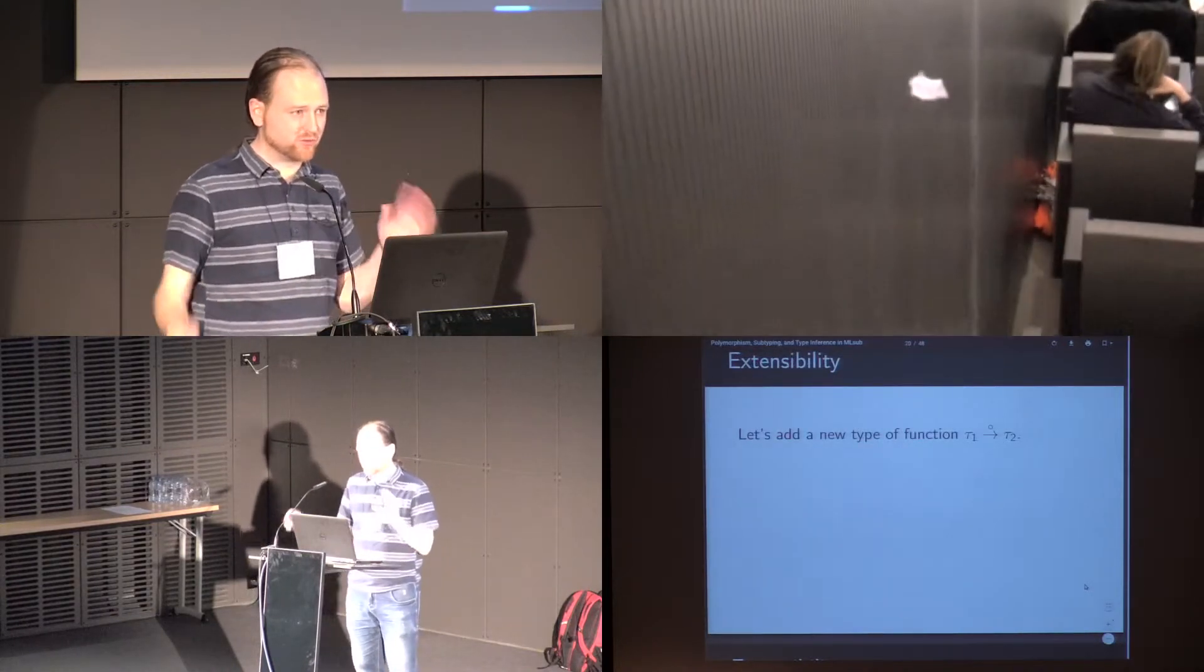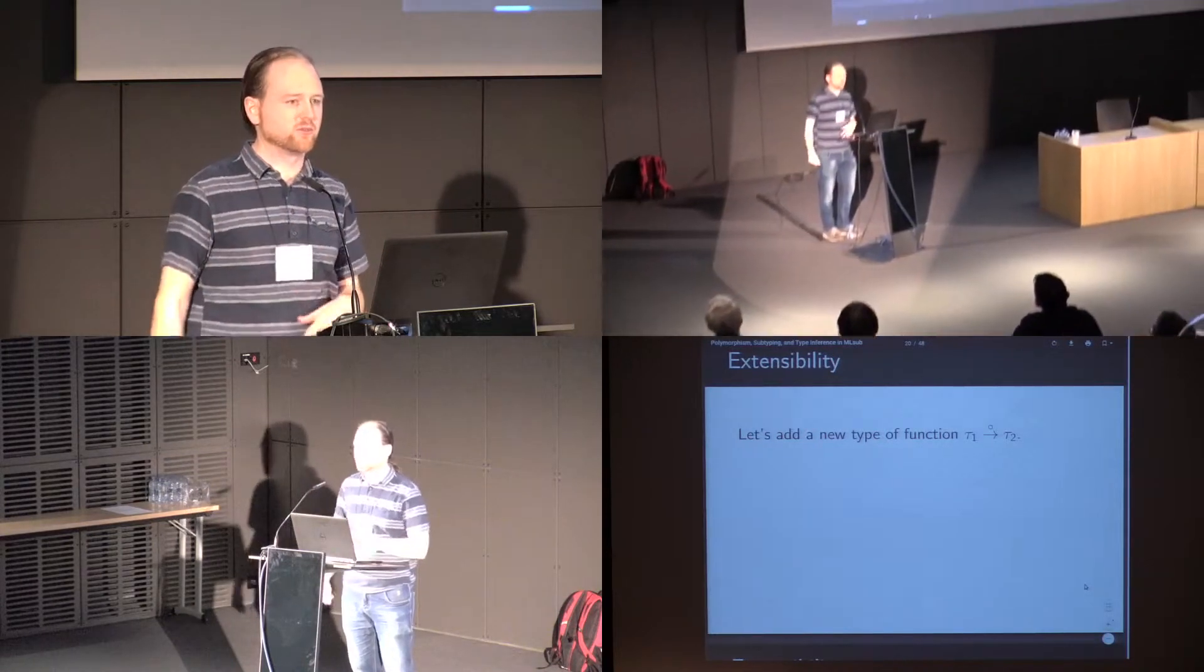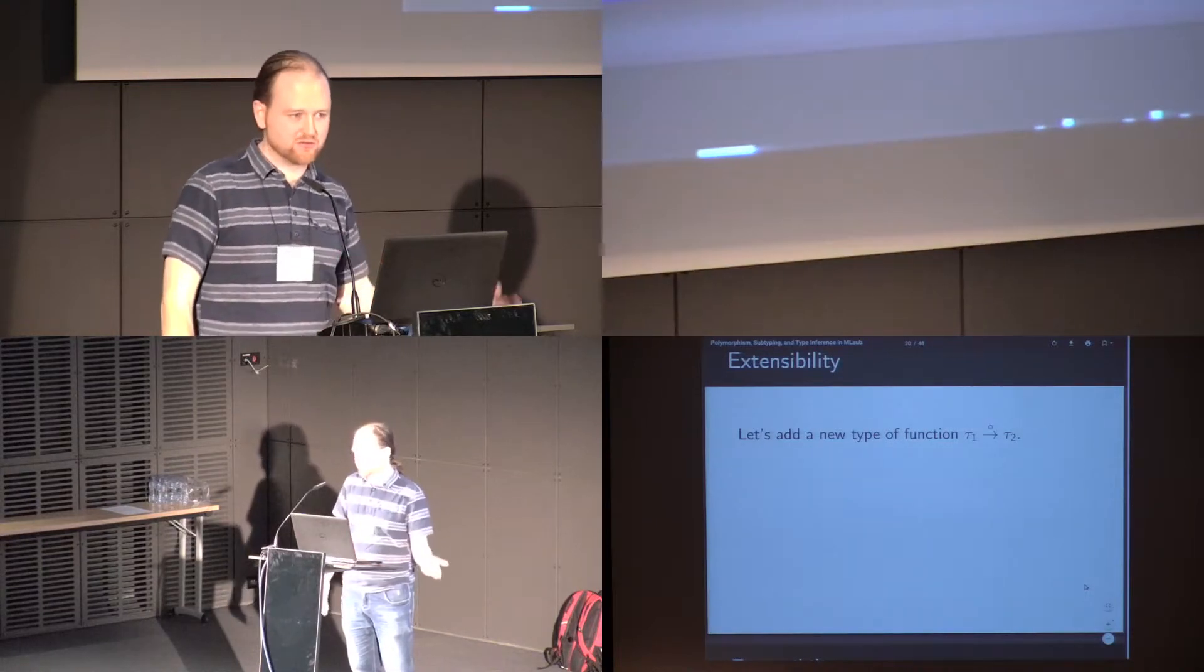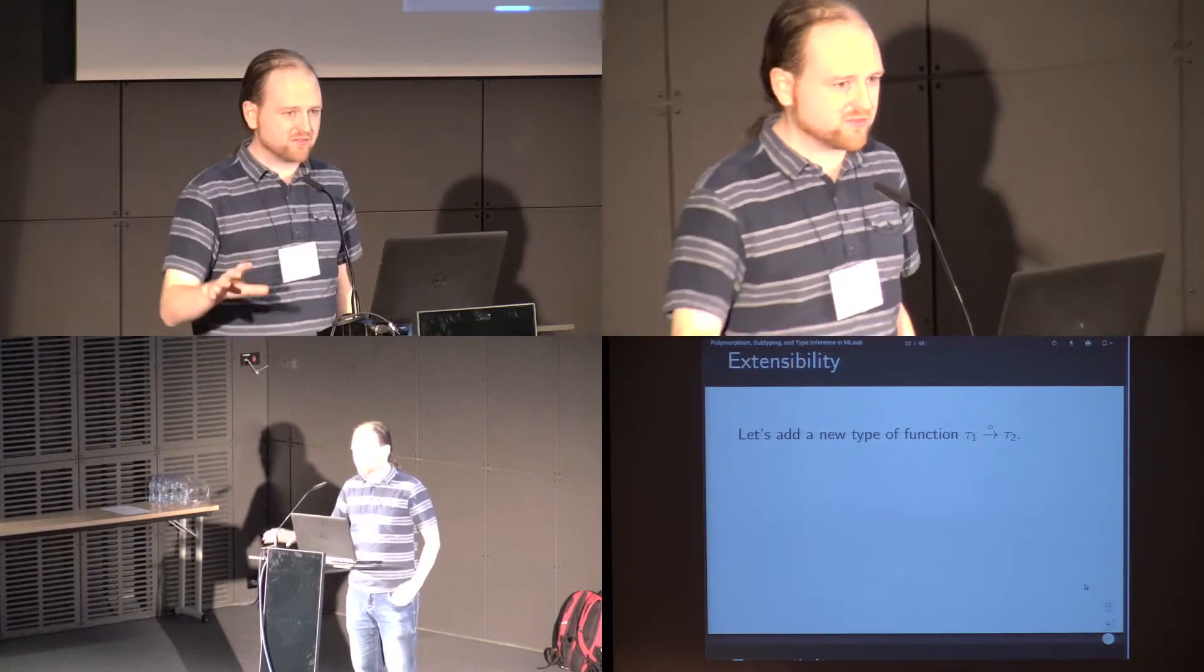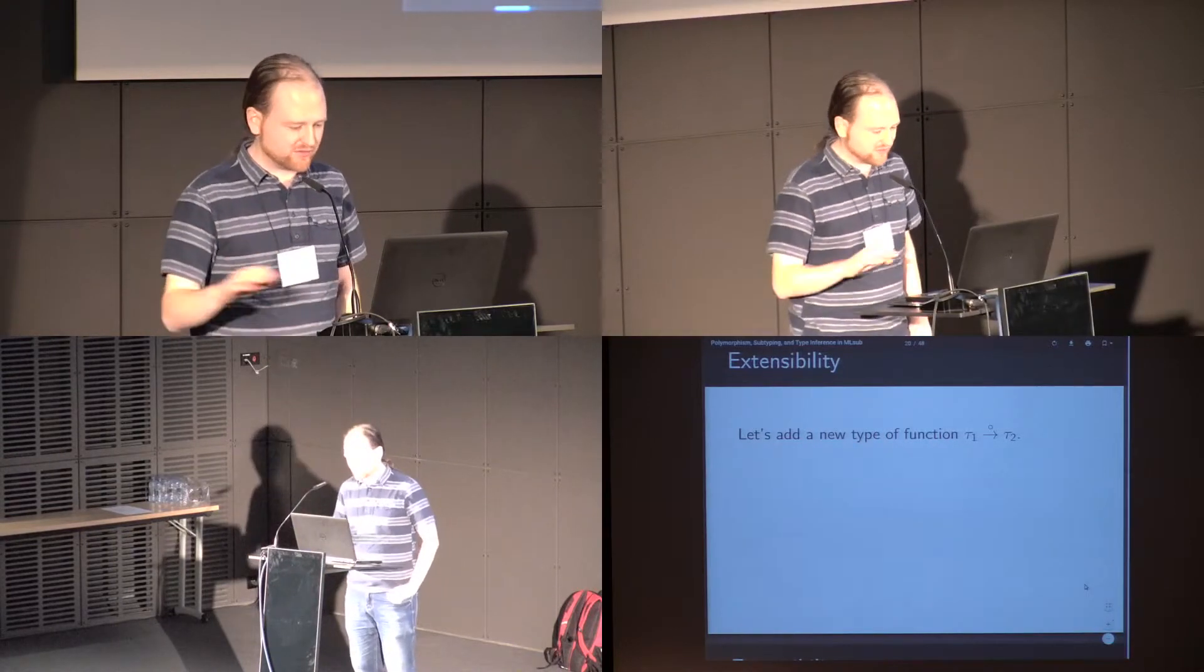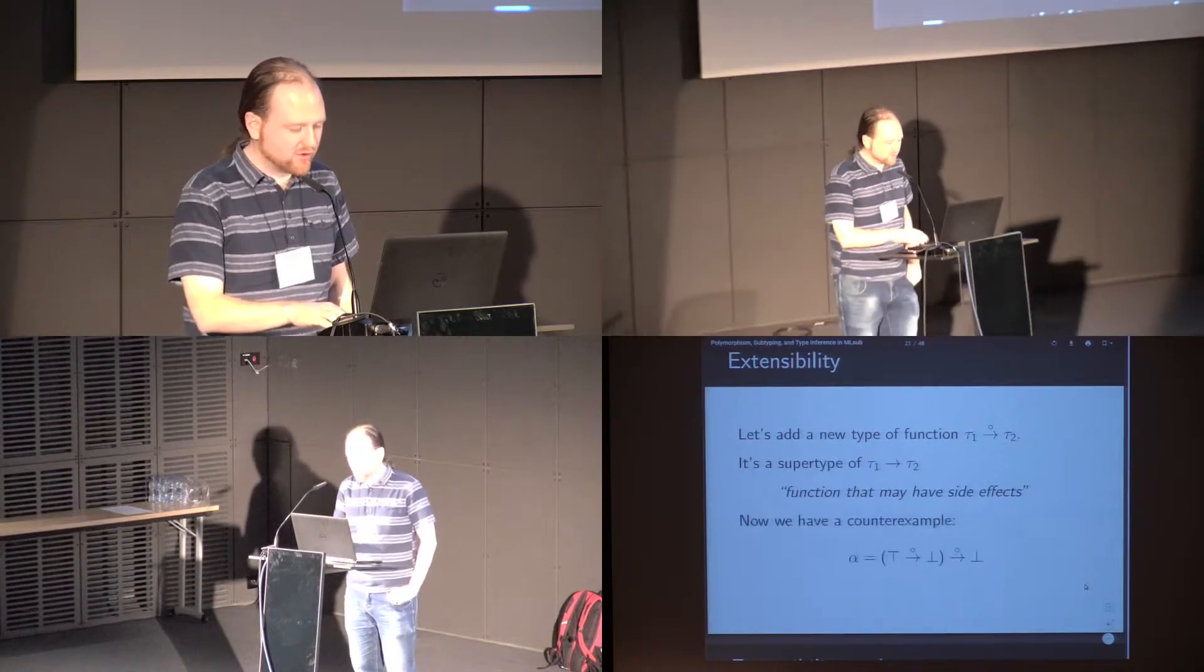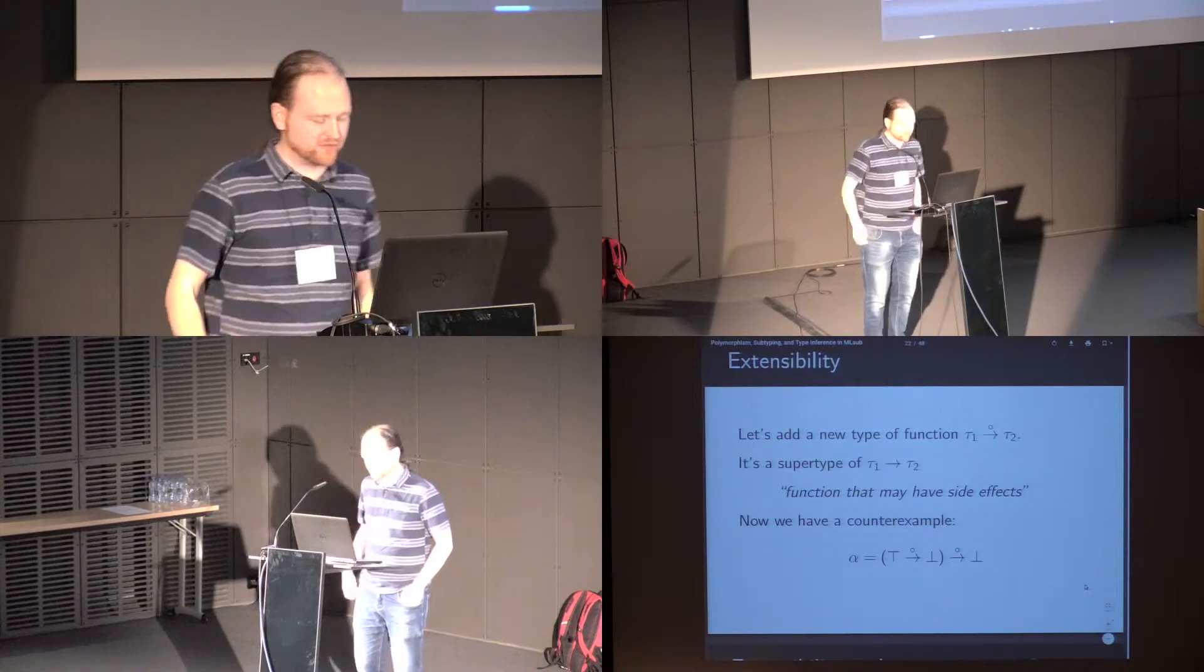These t1 to t2 funny sort of arrow, I'm going to insert them above standard functions. We can think of this as a function which may have side effects if we think of the original arrow as being pure, or something similar. So we add these into the lattice, and we don't affect any of the existing subtype relations. And now we have a counterexample using this new type to that previous case.